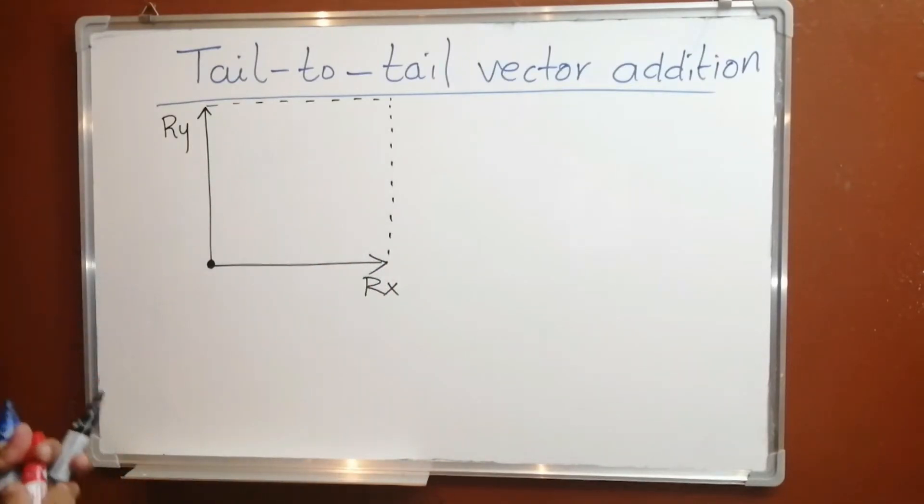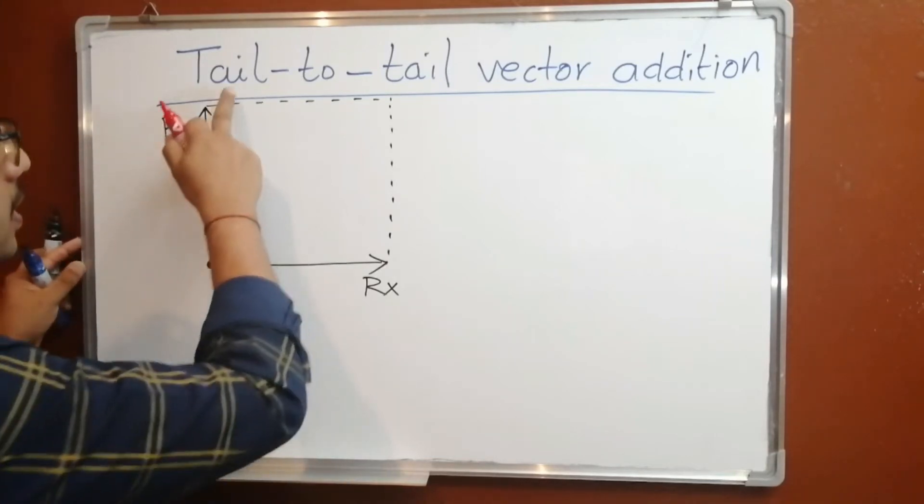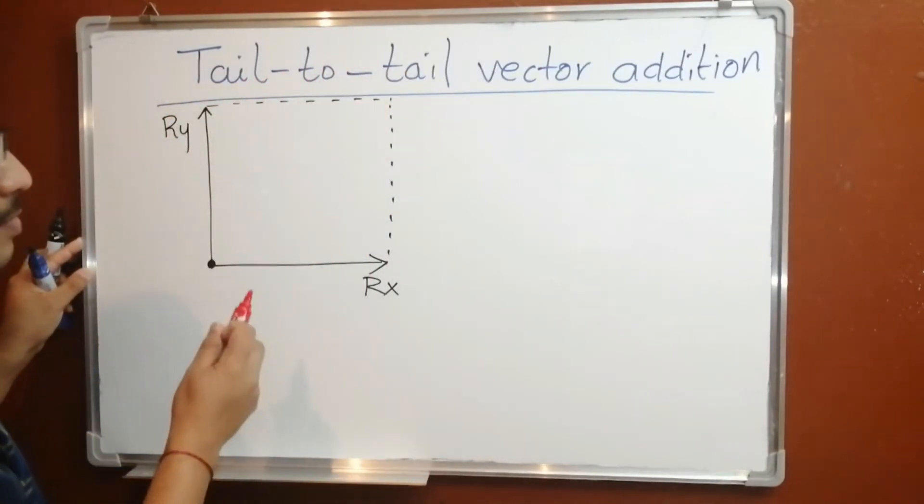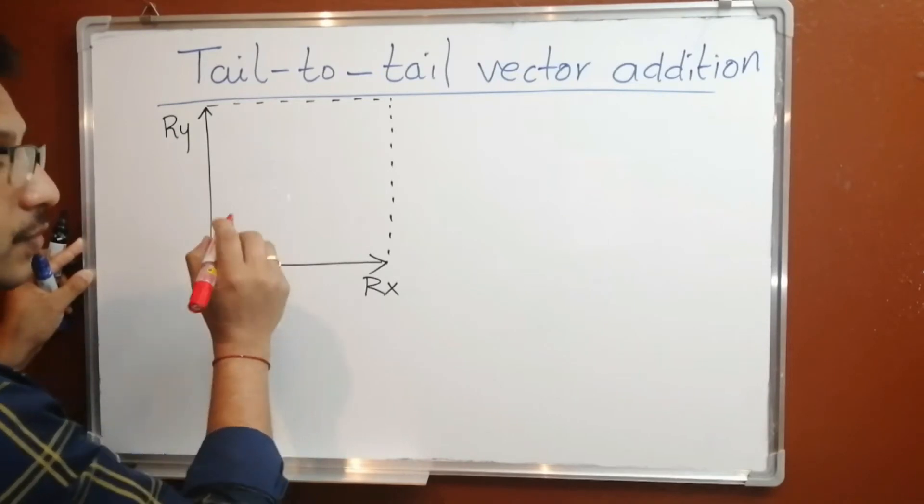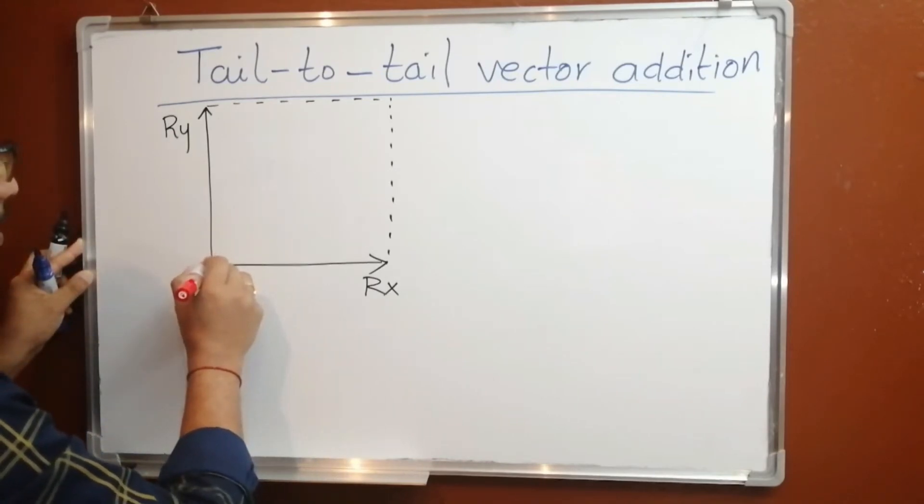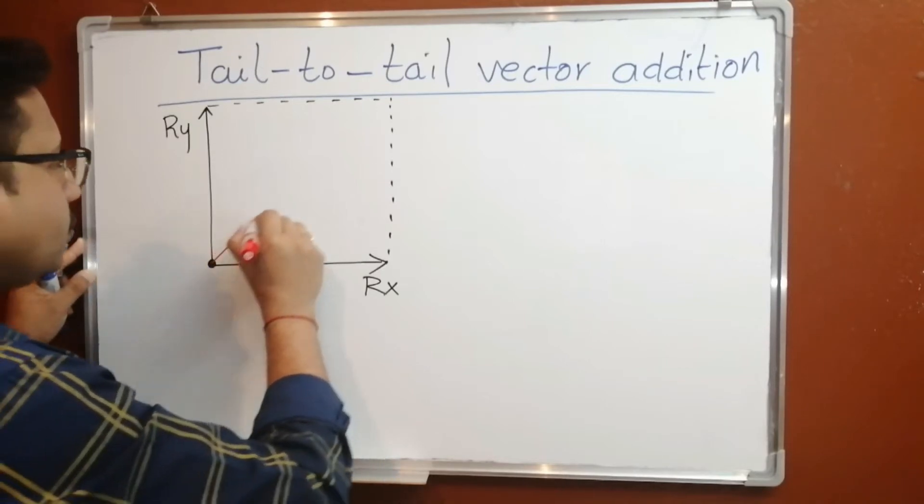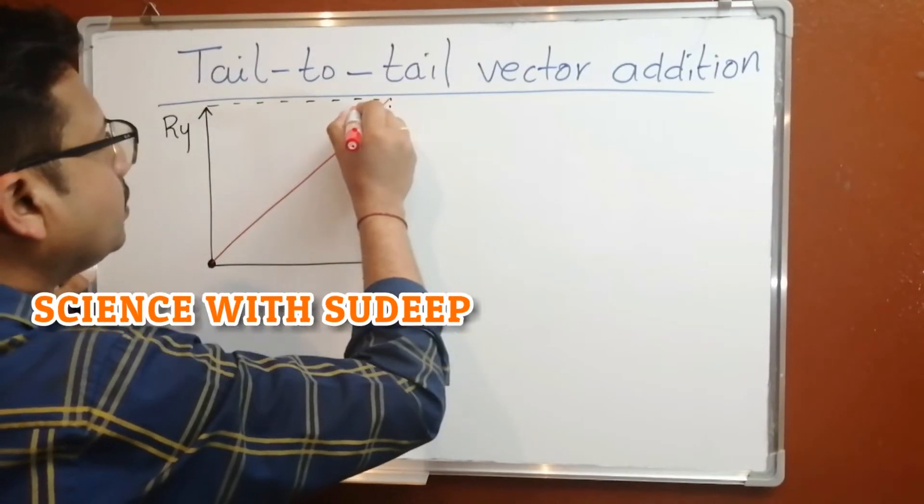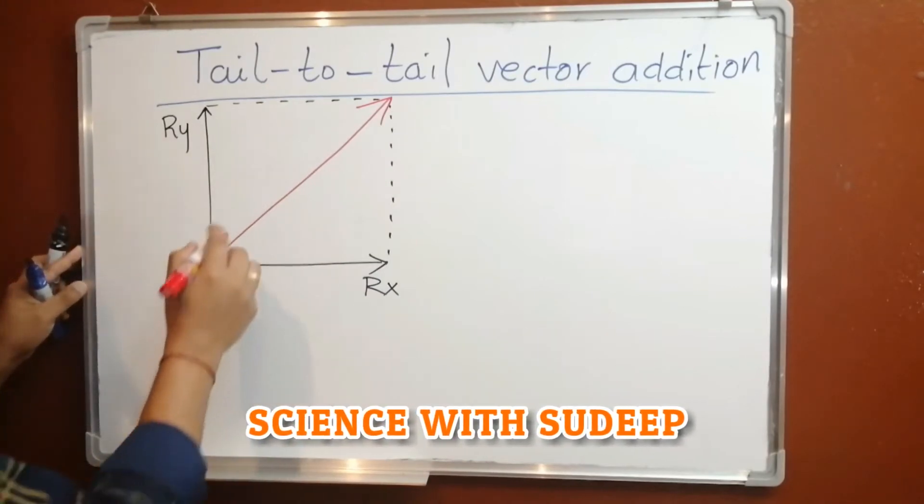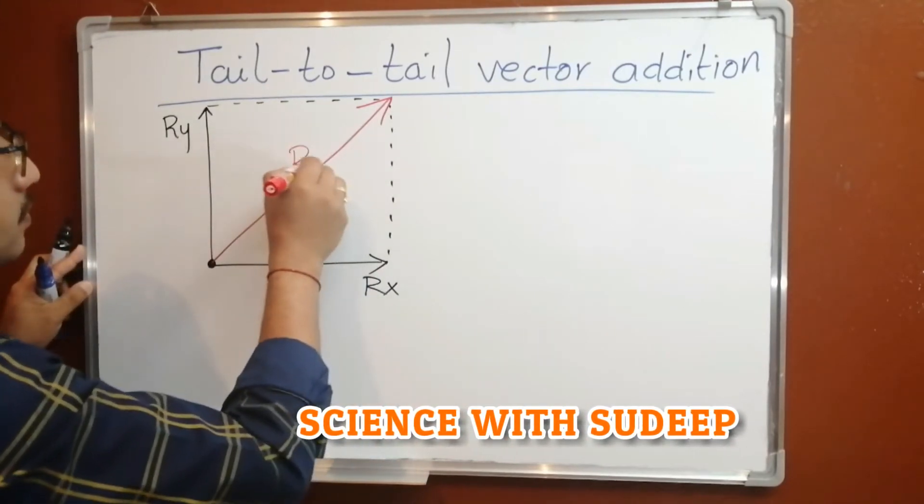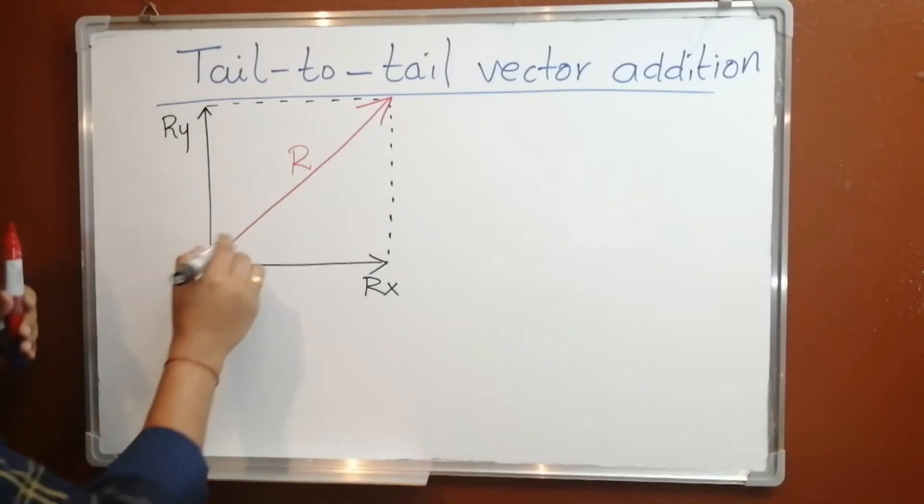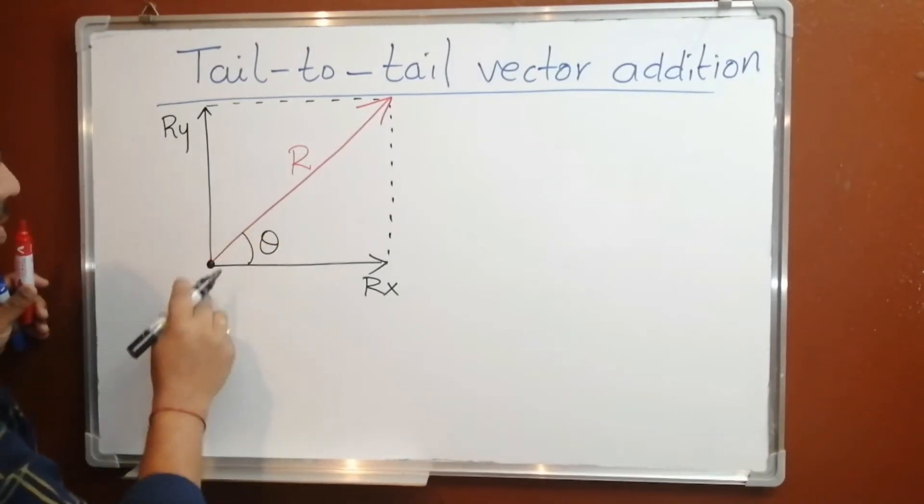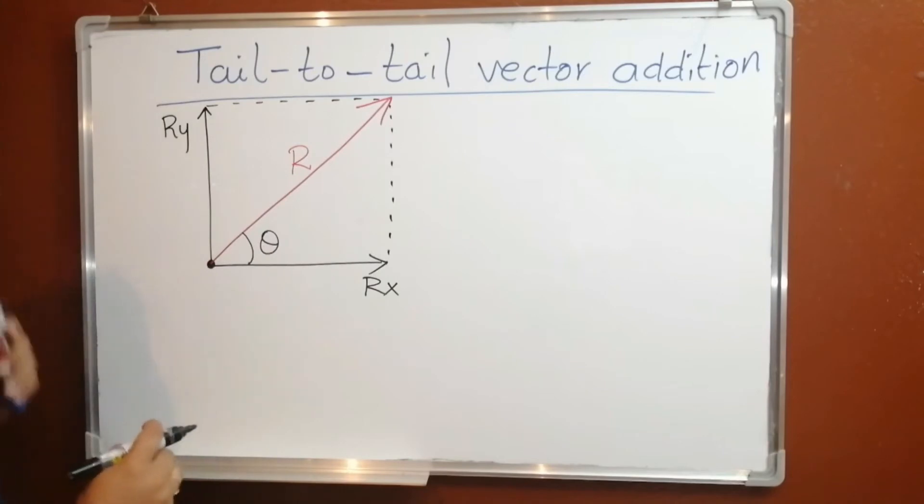The resultant of these two vectors r-y and r-x which is connected by tail-to-tail vector addition method. The resultant of the vector is a vector which originates from the tails of both vectors to the opposite corners of the parallelogram. So this is the resultant vector r. And this is our angle theta which shows the direction of the resultant vector.